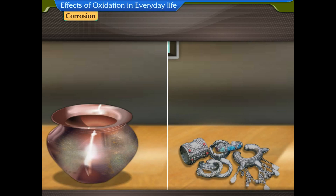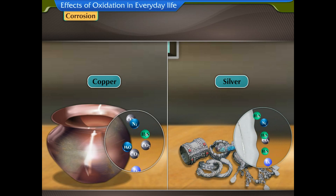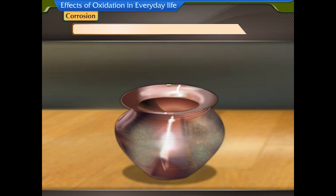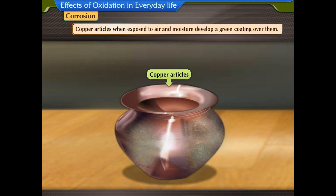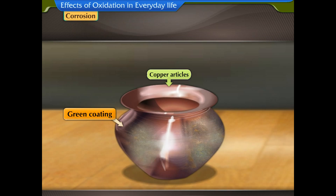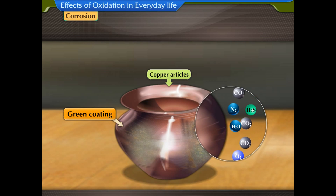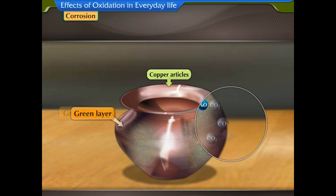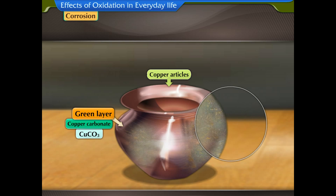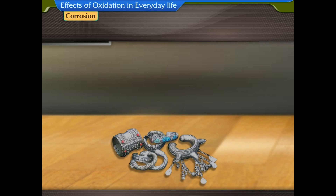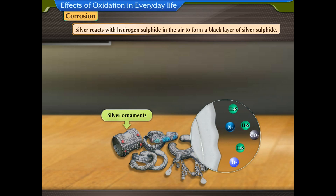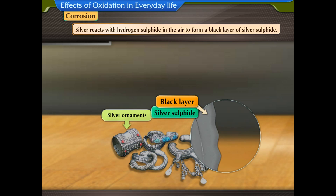Some other metals like copper and silver also get corroded when exposed to light and moisture. Copper articles when exposed to air and moisture develop a green coating over them. Copper reacts with carbon dioxide from the air to form a green layer of copper carbonate, CuCO3. In the same way, silver reacts with hydrogen sulphide in the air to form a black layer of silver sulphide.